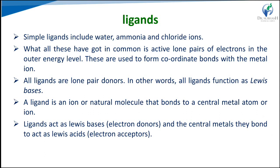A ligand is an ion or molecule that binds to a central metal atom to form a complex. Simple ligand examples include water, ammonia, and chloride ions. Ligands have an electron pair available and may be neutral or negatively charged. They are electron donors attracted to metals, which are electron acceptors at the center of the complex. All ligands have a non-bonding pair of donor electrons in the outer energy level, used to form coordinate bonds with metal ions.